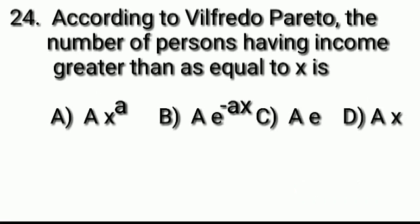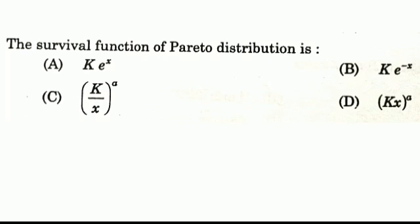Question number 24: According to Wilfredo Pareto, the number of persons having income greater than x — Pareto distribution survival function. Options: A: A·x^{−a}, B: A·e^{−ax}, C: A·e^{ax}, D: A·x^{−a}. The survival function of Pareto distribution — Options: A: K·e^{ax}, B: K·e^{−x}, C: K/x^a (whole raised to a), D: K·x^a. Answer: Option C, (K/x)^a.